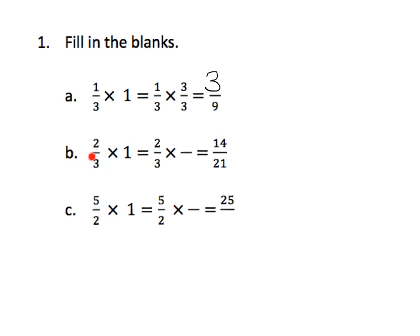Similarly, 2 thirds times 1. We need a fraction equivalent to 1, so the numerator and denominator have to be the same. This time, we're asked to change 2 thirds into 14 twenty-firsts, which means we're going to multiply by 7 over 7 — and sure enough, that is one whole.